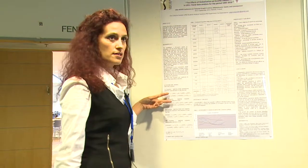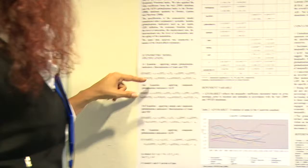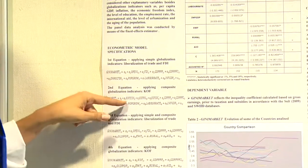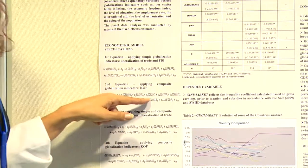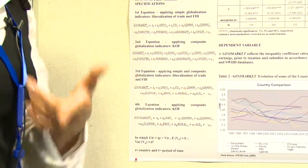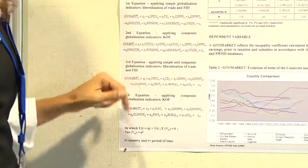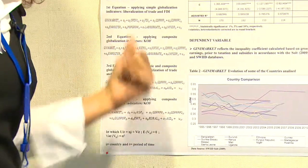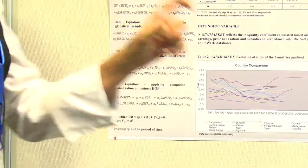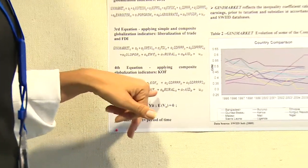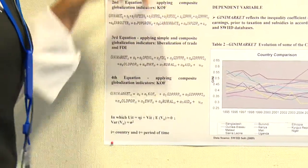The first two equations are similar — the only difference is that the first uses simple globalization indicators and the second uses the KOF index divided into its three components: economic, political, and social. The third and fourth equations are similar to each other as well, with the same difference — trade openness and foreign direct investment in the third equation, and the KOF index in global terms in the fourth — but the explanatory variables differ from the first two.